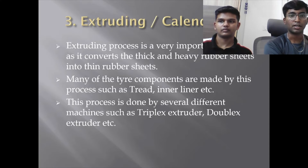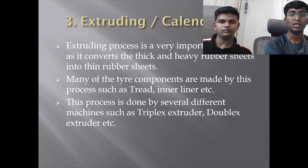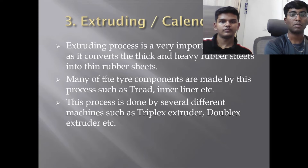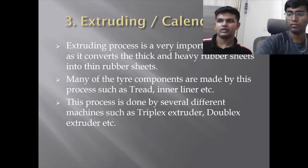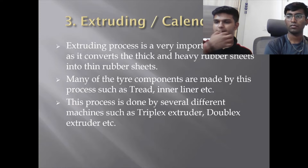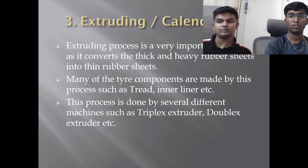The extruding process is very important — it processes the thick rubber sheet into both thick and thin rubber sheets. Many tyre components are made by this process. It is performed by several different machines such as the Banbury extruder. Extruders can be both hot and cold fed systems; typically they are barrel-shaped, with material fed into the barrel and the mixed compound pushed out by a screw mechanism. Tyre components such as tread and sidewall are formed by extrusion of uncured rubber.